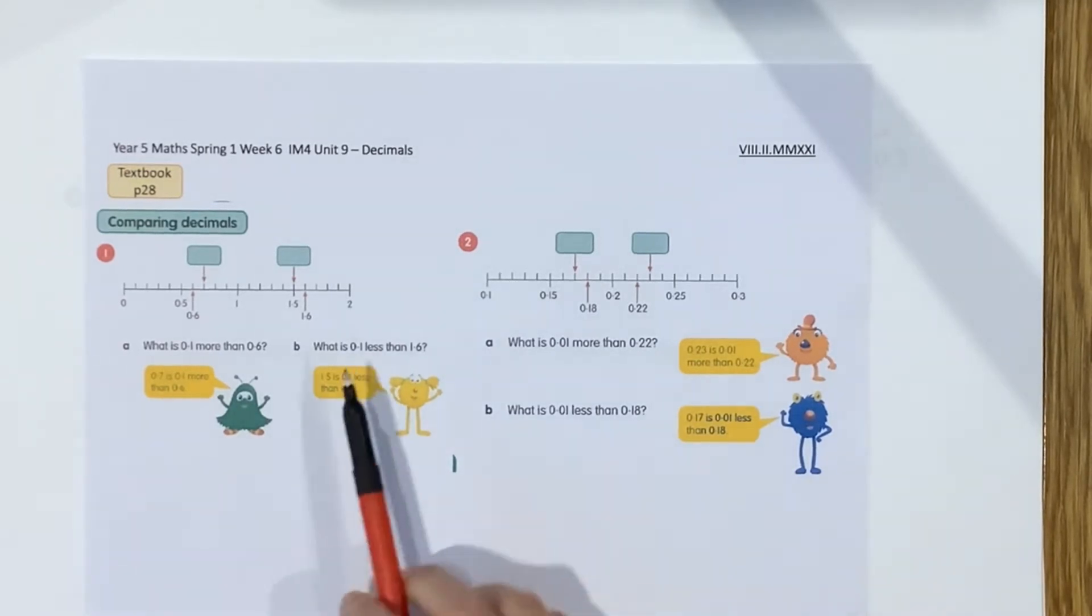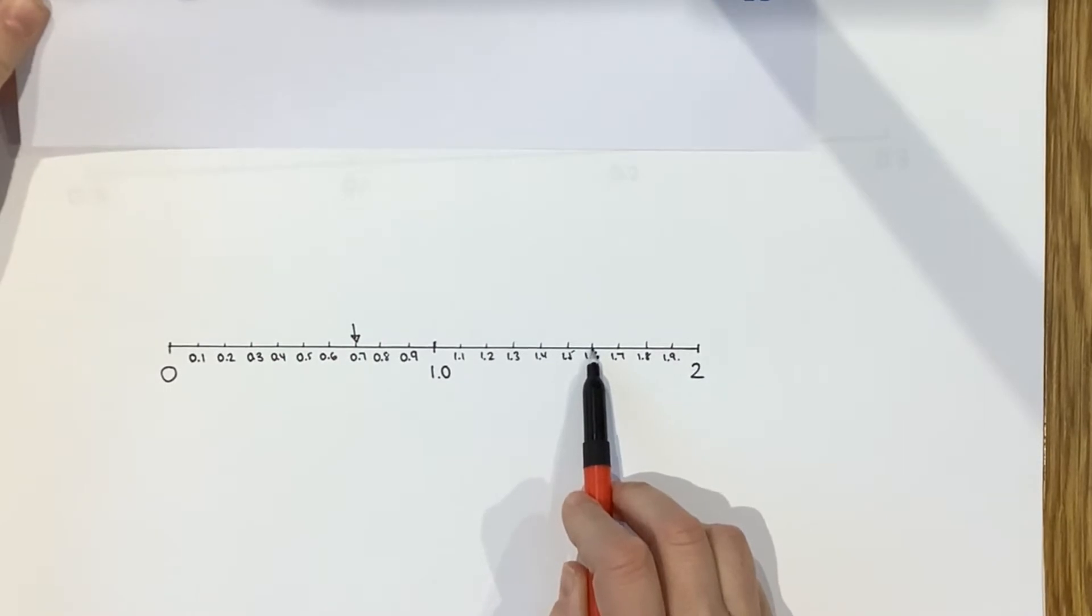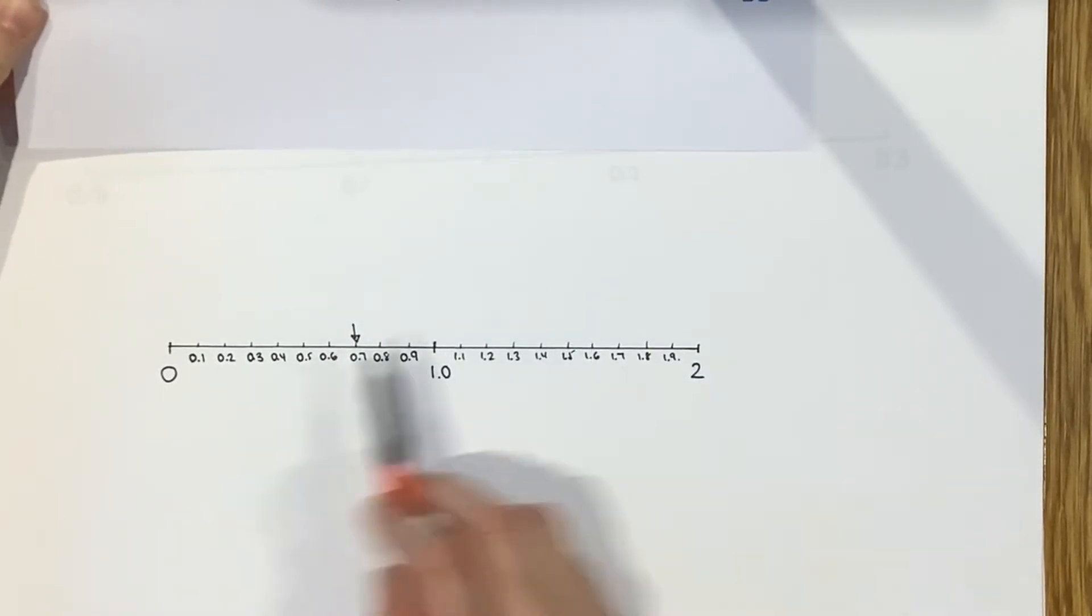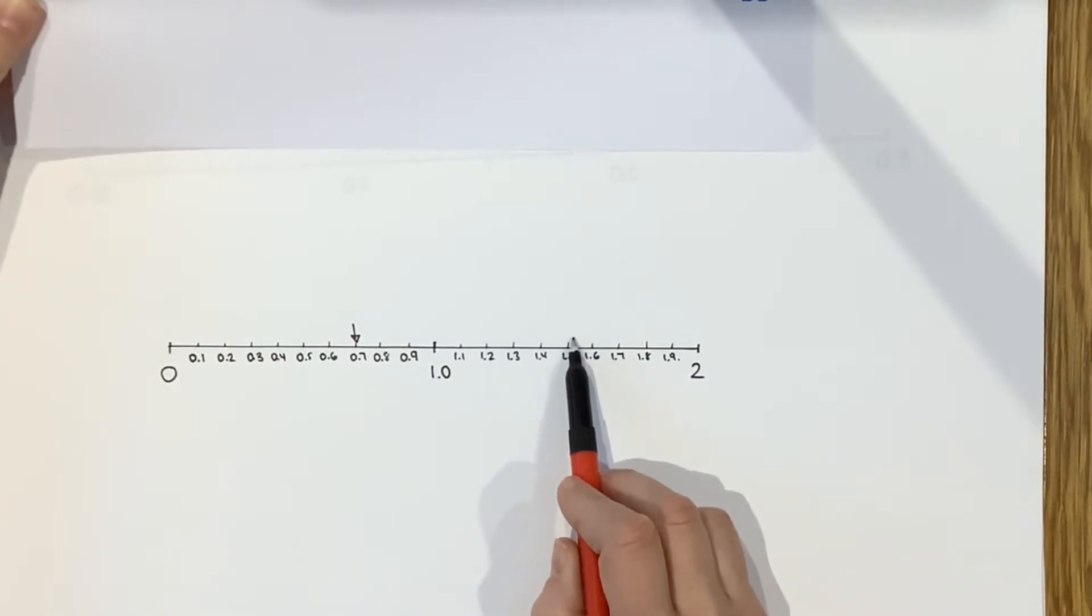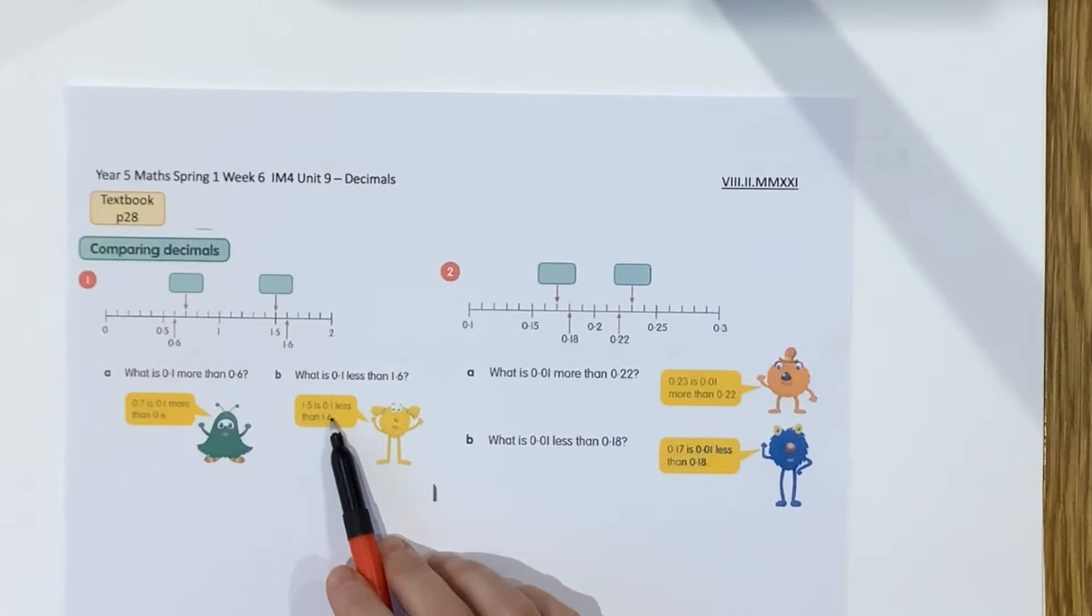And then B, what is 0.1 less than 1.6? Well, same thing on my number line. If I go to 1.6 and I want to go less, so I want to be going in this direction, then I'm going to go back along the number line to 1.5. So 1.5 is 0.1 less than 1.6.